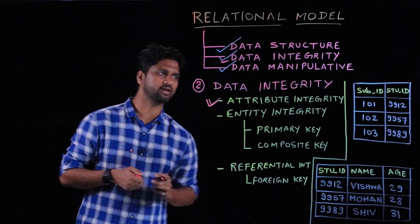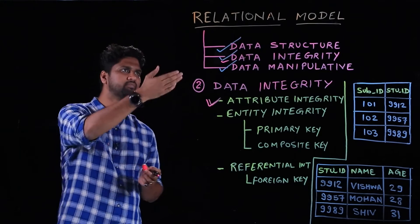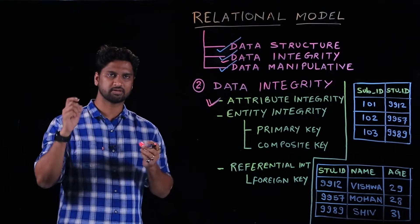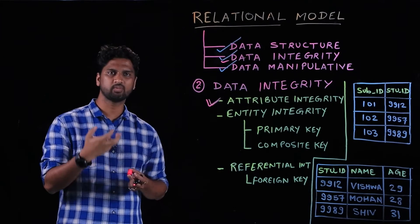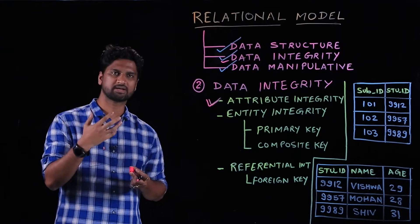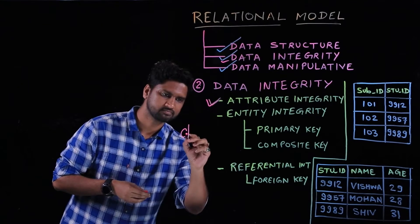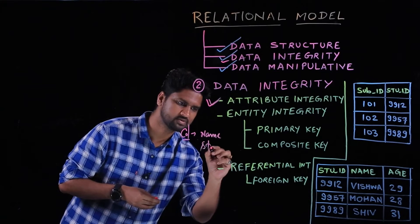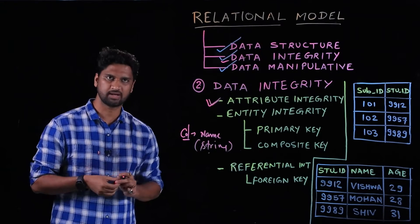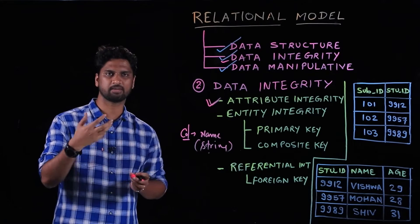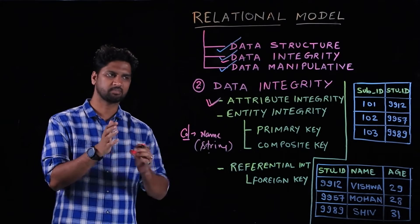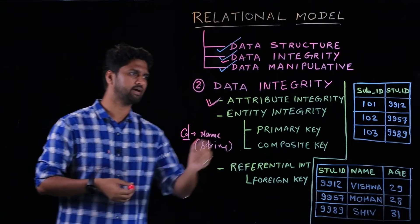The first kind of data integrity guarantee is attribute integrity. As discussed in data structures, the relation header specifies all column names along with their types. When you define a column with a type, it ensures you cannot store data of any other type in that column. For example, if a column named 'name' is of type string, anyone adding data must only store strings — storing long, integer, or boolean values will cause an error. This is attribute integrity, achieved by constraints defined when creating a table.